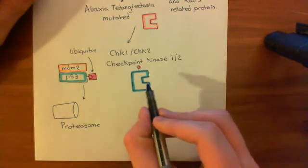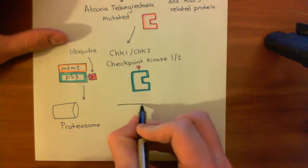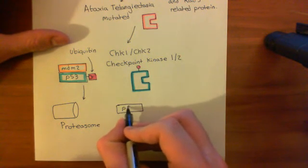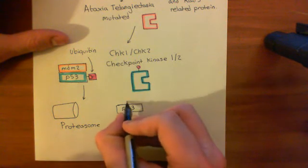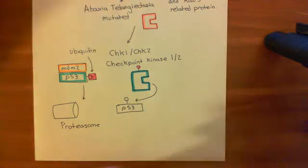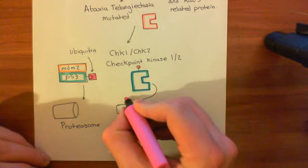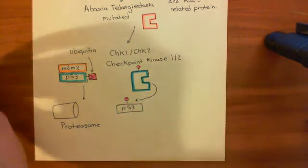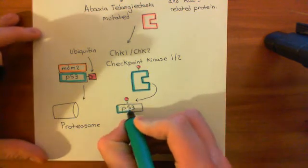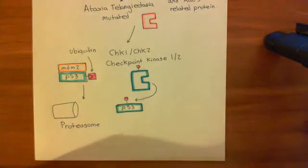Now, what's going to happen is when you activate the checkpoint kinase 1-2, what these are going to do is when you initially make the P53, so the P53 has just come out, it's going to be phosphorylated by the checkpoint kinase 1 or 2. So they're going to add a phosphate group onto the P53. And what this phosphate group is going to do is it's going to stop the MDM2 from being able to bind to the P53. So the P53 escapes the binding of MDM2, and it escapes the destruction.